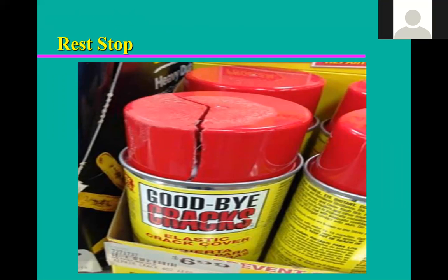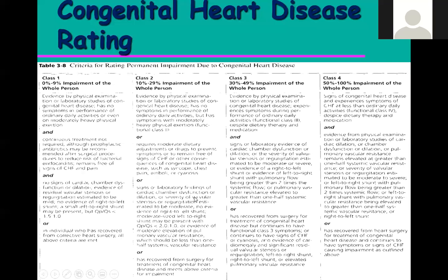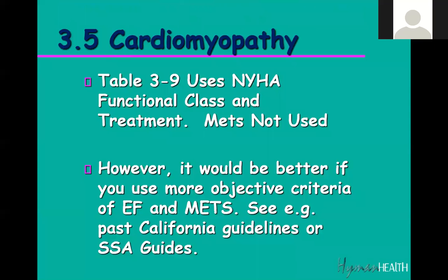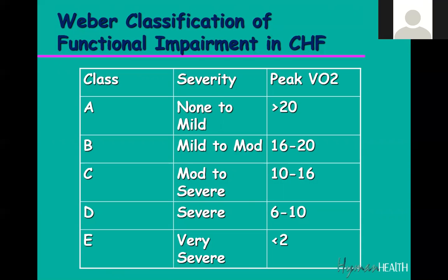Congenital heart disease — things you're born with — is the next section. Again, functional class criteria come into play to guide you. Cardiomyopathy goes to large charts; in that chart they don't use METs, which is an oversight from when it was written. However, other guidelines like Weber's classification system do use METs, and that's one way to determine what someone with a dilated heart can do.